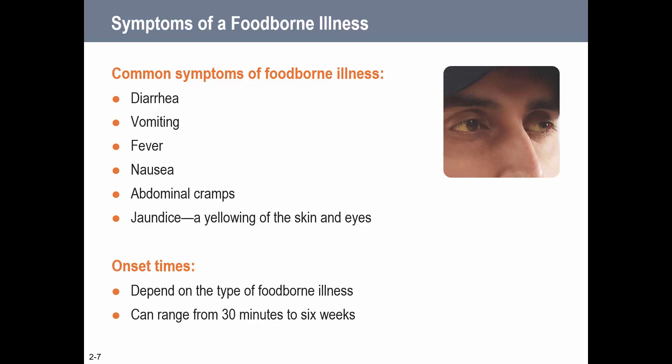The onset time of foodborne illness also varies - I like to use the 30 minutes to 6 weeks range, though normally it's 30 minutes to closer to a day. Some people assume that whatever they ate last is what made them sick - if they had dinner at 6 p.m. and got sick at 9 p.m., they assume it was the dinner. But it could also be what they had for breakfast or lunch, because onset time can vary based on the type of pathogen.